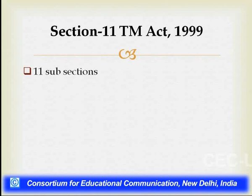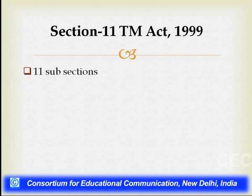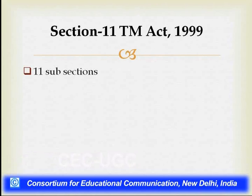Out of these 11 subsections, three or four are of much importance as far as trademark practice and trademark litigation is concerned. They are of utility for the registering authorities, the trademark board, the courts, and the Intellectual Property Appellate Board. Maximum trademark litigation is dealt under Section 11(1) or Section 11(2). In today's discussion, Section 11(1) and 11(2) will remain our primary topic.